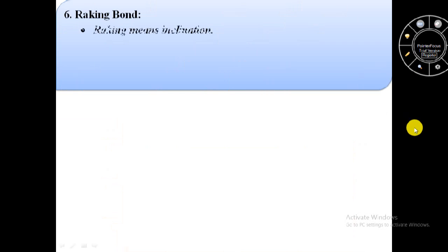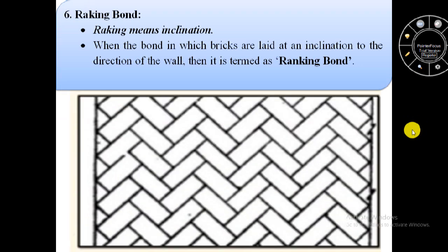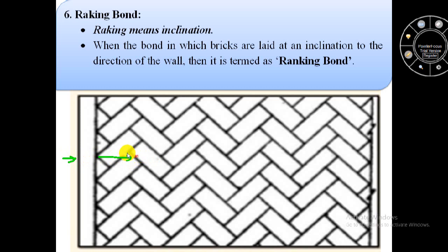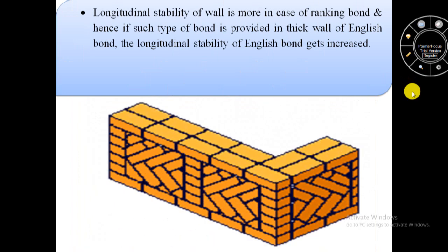The last type of bond is raking bond. Raking means inclination. When bricks are laid at an inclination to the direction of the wall, it is termed as raking bond. In this image we can see the direction of the wall and the direction of the bond, where bricks are laid at an inclination to the wall direction. This type of bond is used in thick walls, and the longitudinal stability of the wall is more in the case of raking bond.